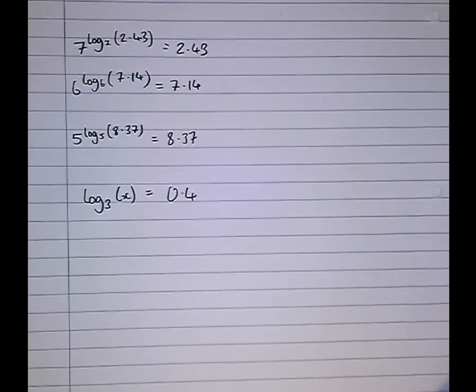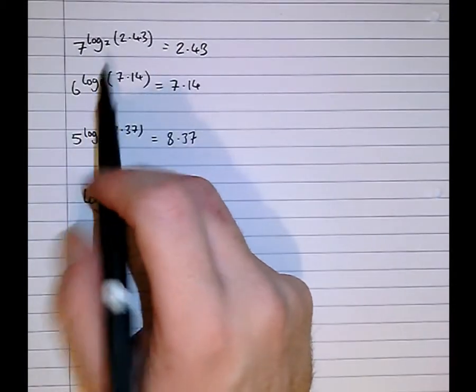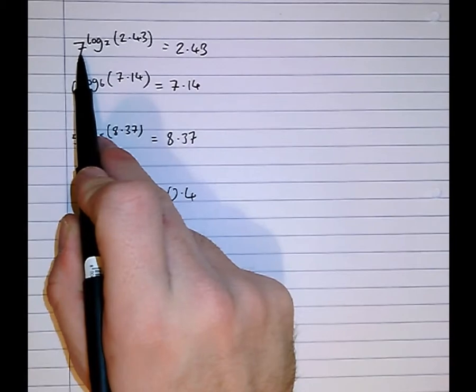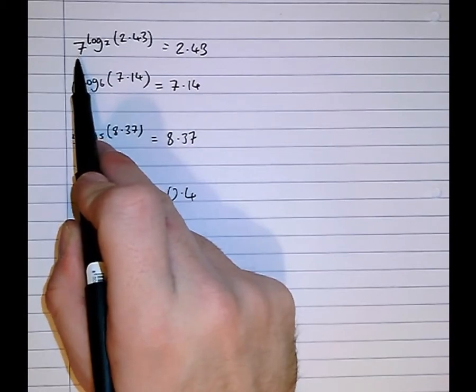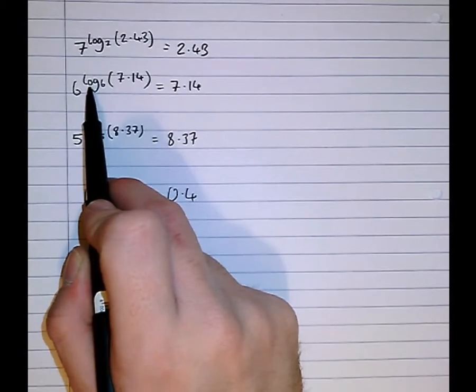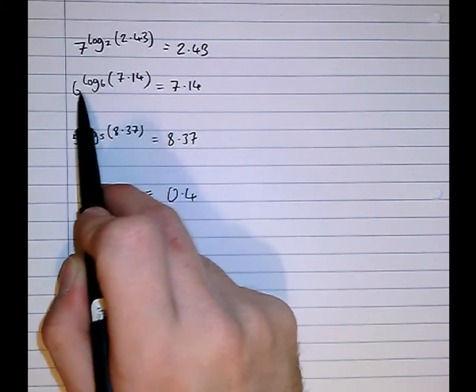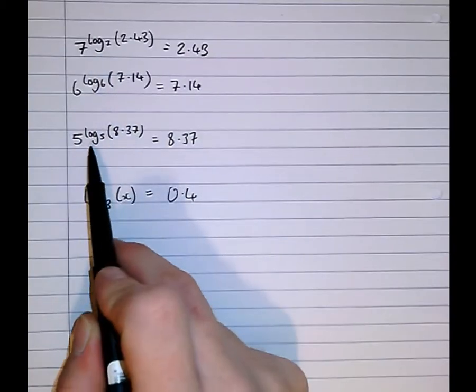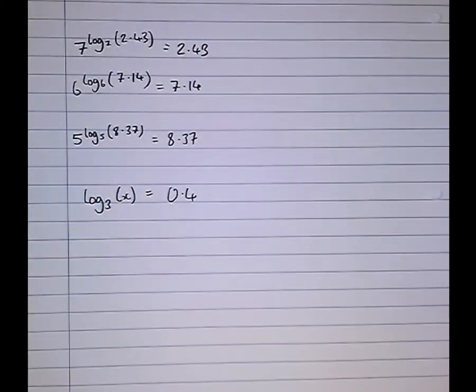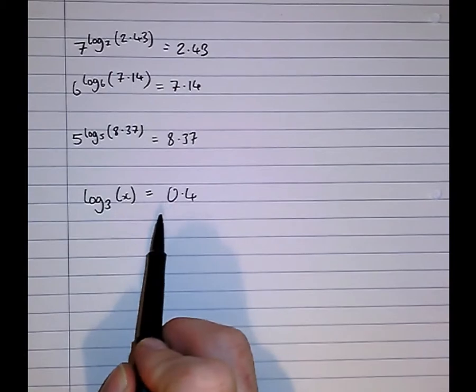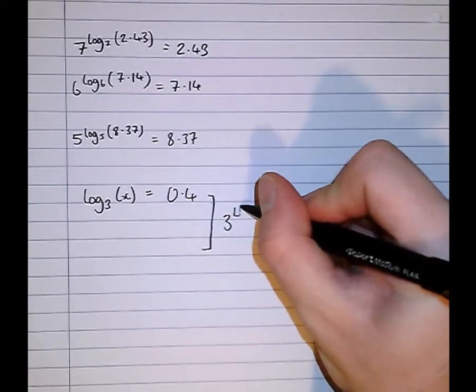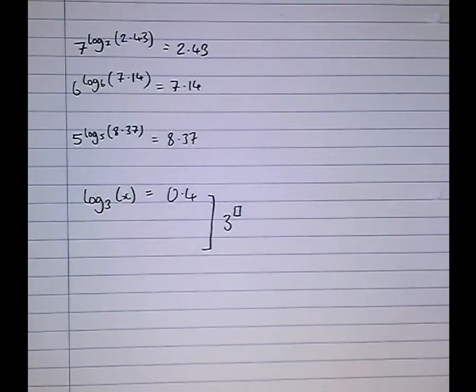Well we know the opposite now from these examples here. The opposite of log to the base 7-ing something is 7-ing it, if such a term exists, 7 to the power of it. The opposite of log to the base 6-ing something is to 6 it. The opposite of log to the base 5-ing something is to 5 it. So here, we're going to 3 both sides.